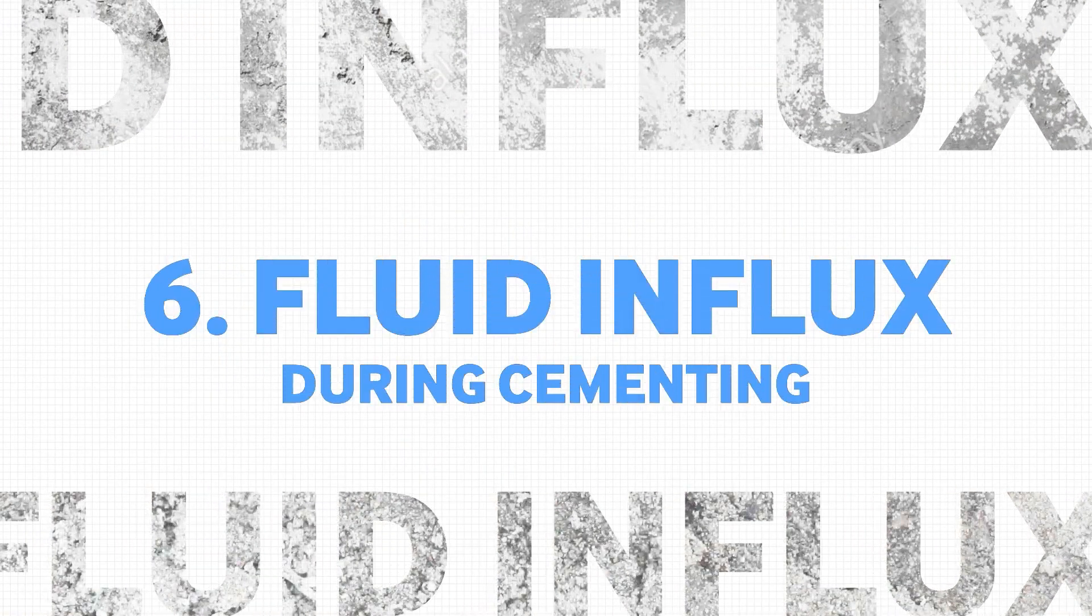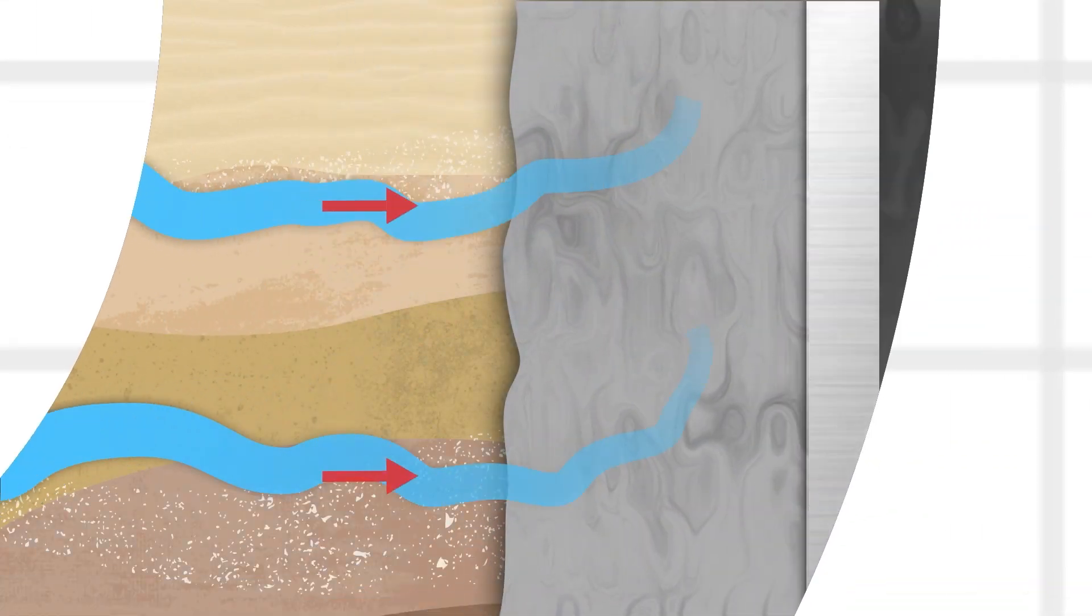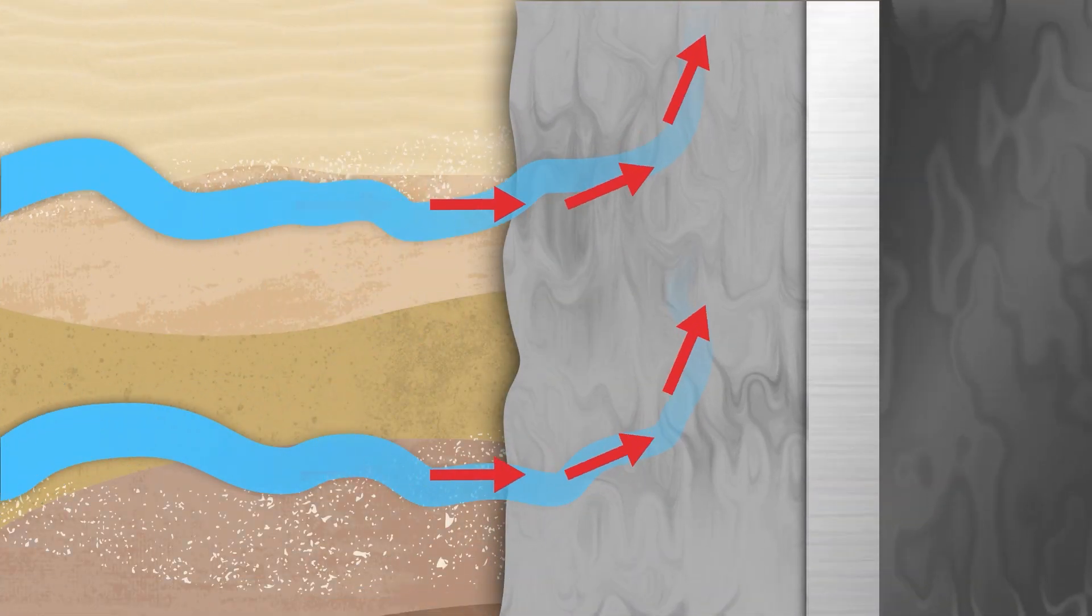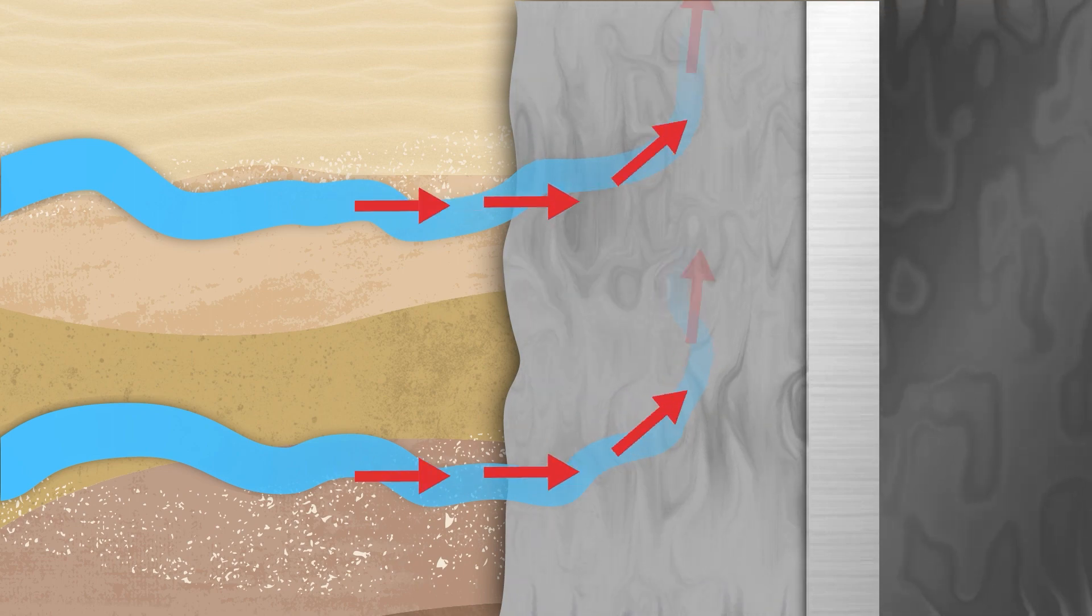Observing a higher rate of flow at the return line than the pump rate can indicate an influx of formation fluids during cementing. The key to preventing fluid influx is the use of flow checks before cementing and maintaining annulus pressures above the formation pressure.